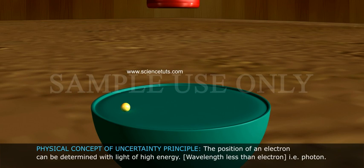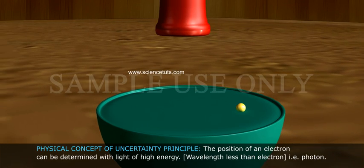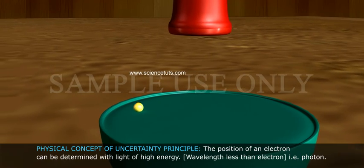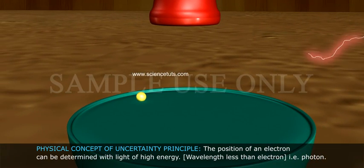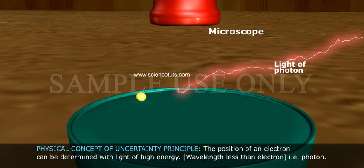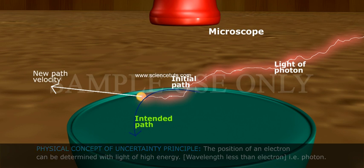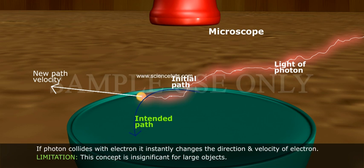Physical Concept of Uncertainty Principle: The position of an electron can be determined with light of high energy (wavelength less than electron), i.e., photon. If photon collides with the electron, it instantly changes the direction and velocity of electron.